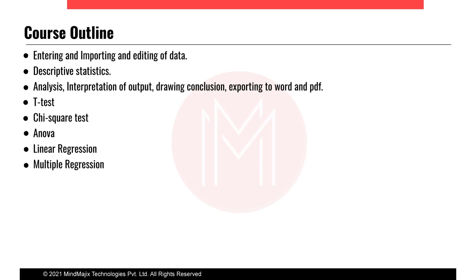Now here is the course outline for IBM SPSS Modeler. We cover entering, importing, and editing data; descriptive statistics; analysis and interpretation; t-test; chi-square test; ANOVA; linear regression; and multiple regression. For example, if I want to predict which stocks to invest in, I need graphs and predictions — chi-square test is completely part of the predictions and modeling.